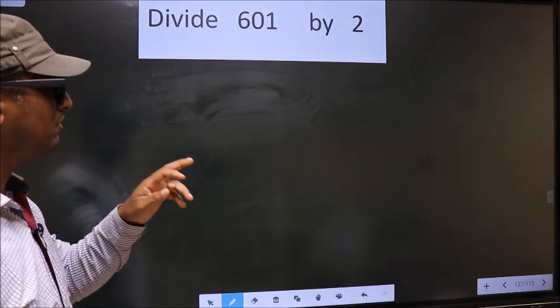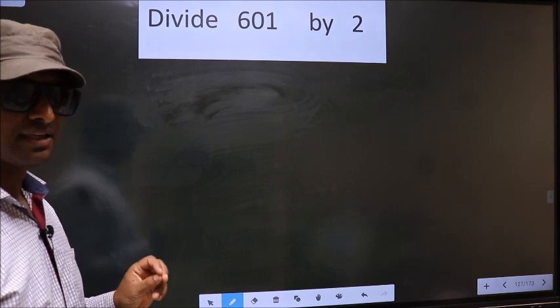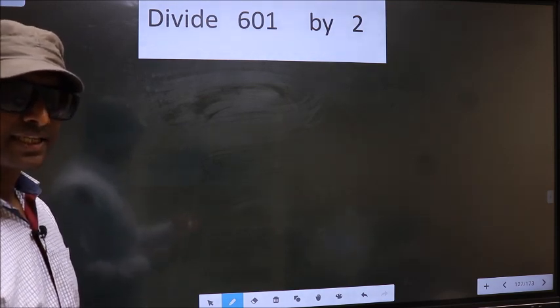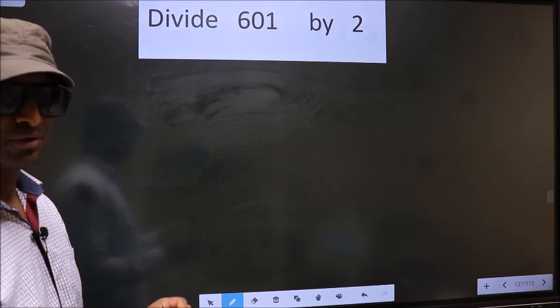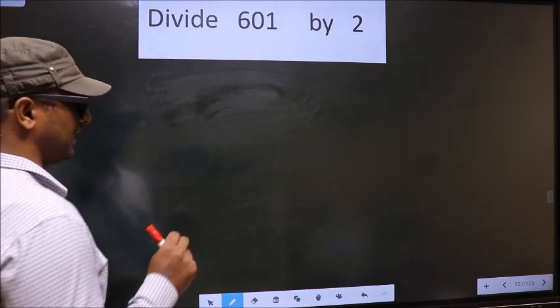Divide 601 by 2. While doing this division, many do this mistake. What is the mistake that they do? I will let you know. But before that, we should frame it in this way.